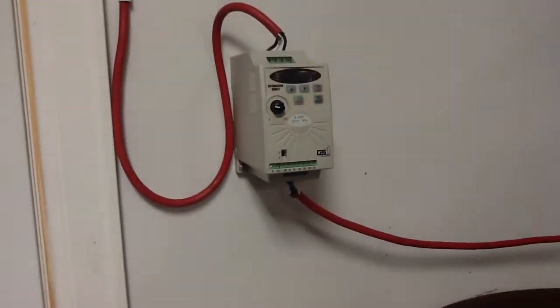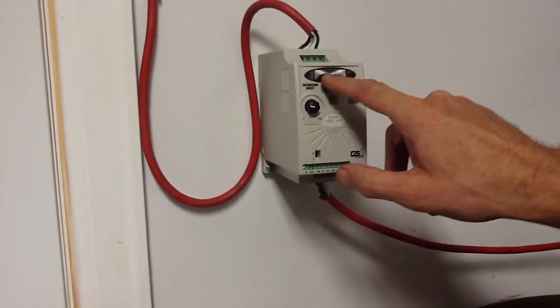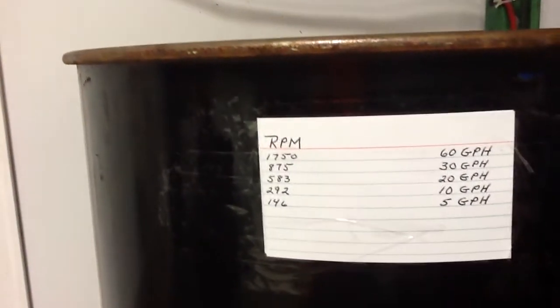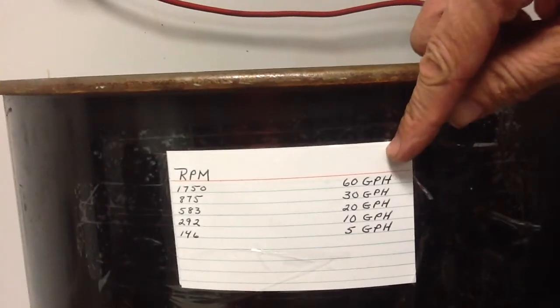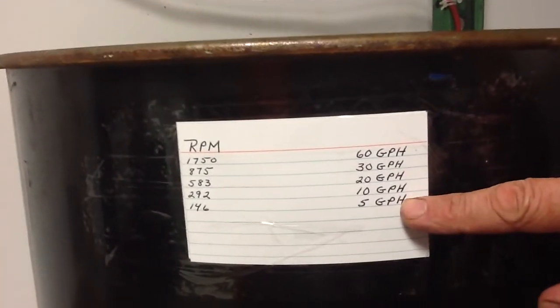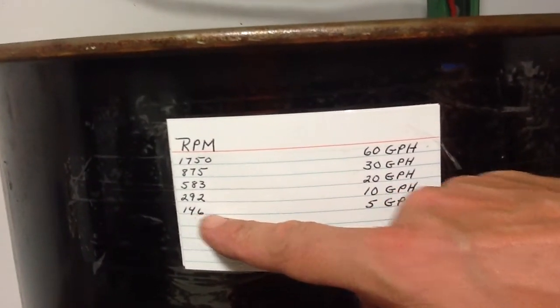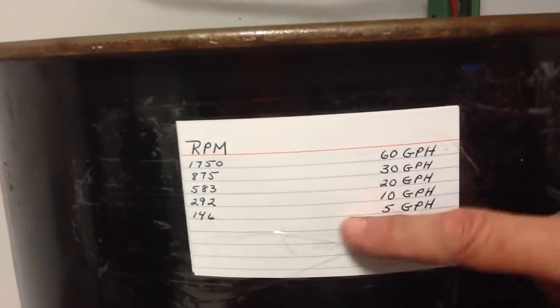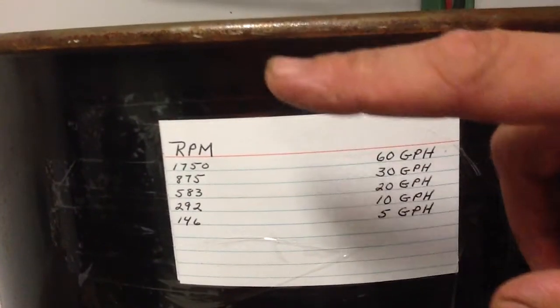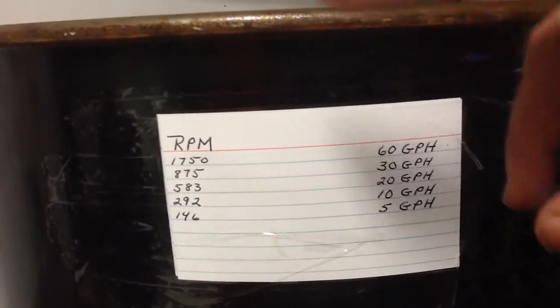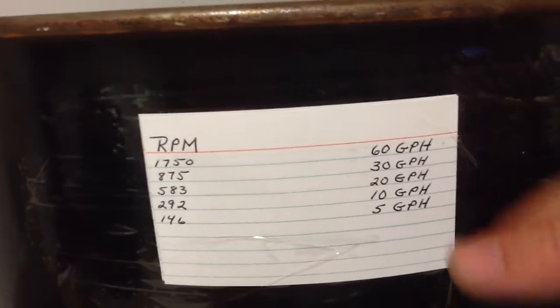Using the frequency drive, I can adjust the flow. If you look right here, there it is. RPM will correlate with the flow. So we're down to five gallons per hour. I can put my motor at 146 RPM and we're going to sell this kit too. We're going to sell the pump, the motor, the frequency drive so you can adjust.